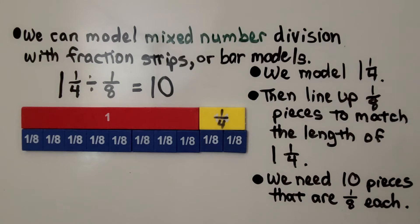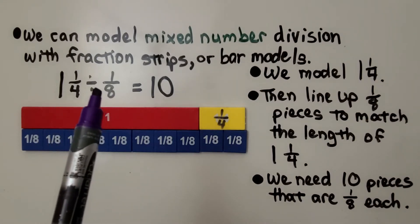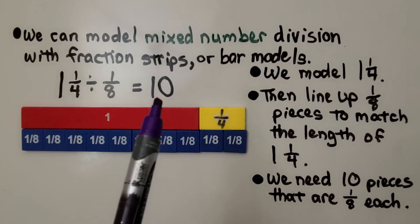We can model mixed number division with fraction strips or bar models. We have 1¼ divided by ⅛, and the quotient is 10.